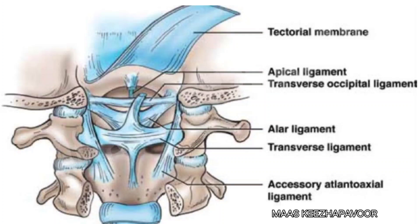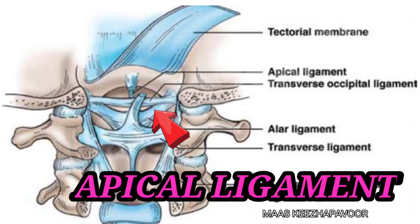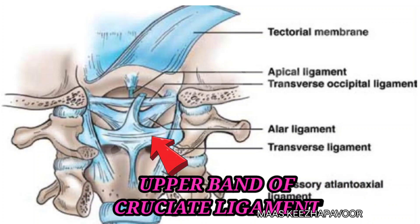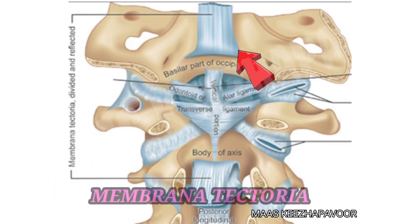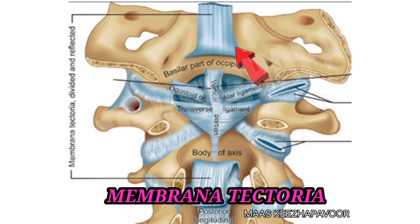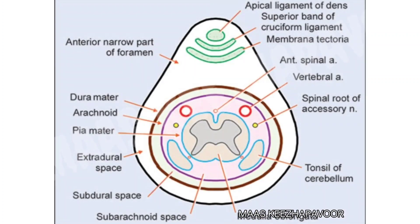The structures passing through the anterior compartment of the foramen magnum are: the apical ligament, which is a remnant of the notochord; the upper band of the cruciate ligament; and the membrana tectoria, which is the upward continuation of the posterior longitudinal ligament.